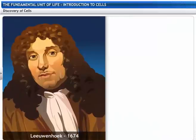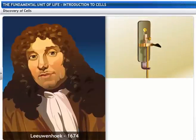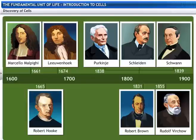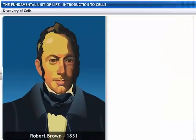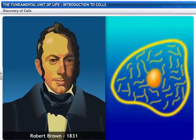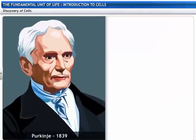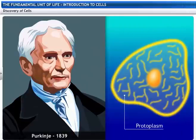Leeuwenhoek, in 1674, with the improved microscope, discovered free-living cells in pond water for the first time. Robert Brown, in 1831, discovered the nucleus in the cell. Purkinje, in 1839, coined the term protoplasm for the fluid substance of the cell.